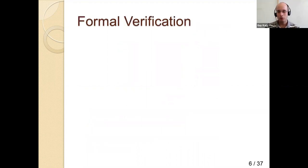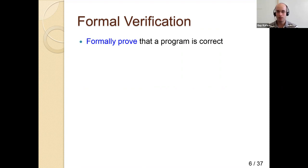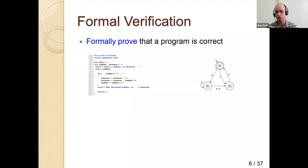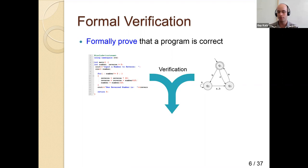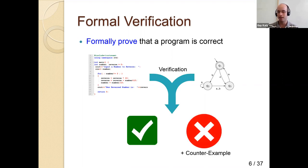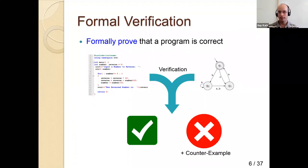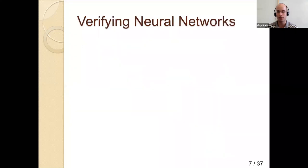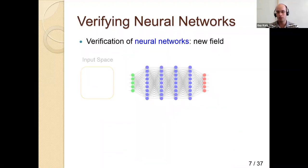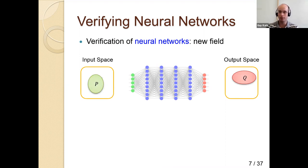Our goal is to develop techniques for formally verifying neural networks. Traditionally, verification has existed for many decades: you take a program and a specification and formally prove the program satisfies the specification, or you get back a counterexample showing a bug. Verification of traditional software is well studied. Verification of neural networks, on the other hand, is fairly new — only a few years old. The idea is you take a neural network, look at the space of all possible inputs and outputs, define two subsets P and Q, and ask: does there exist a point in P that is mapped to Q?